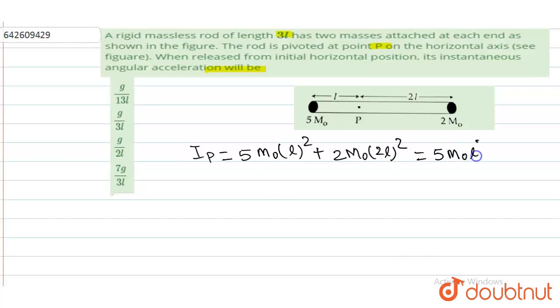This is 5M₀L² plus 4M₀L². So moment of inertia is 13M₀L². Now, applying the torque equation.